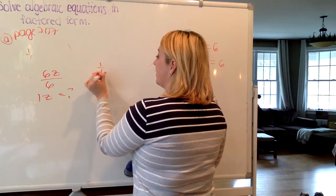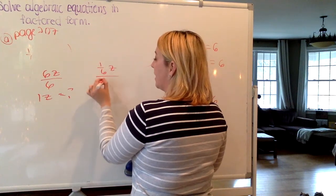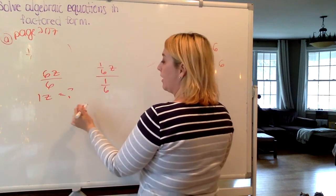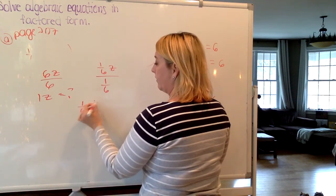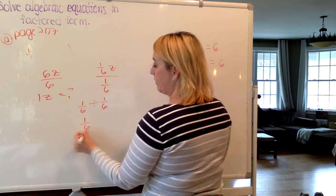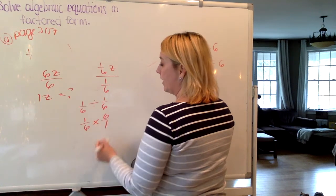When you have 1/6 z, it's the same as saying divided by 1/6, divided by 1/6. But remember, with fraction division, 1/6 divided by 1/6 is really the same as saying 1/6 times its reciprocal.